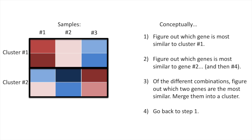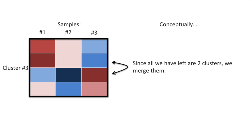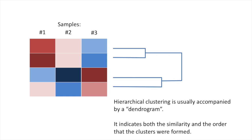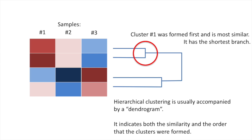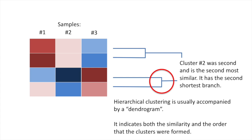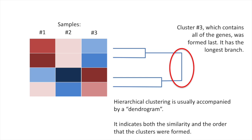Now we go back to step one. However, since all we have left are two clusters, we merge them — and we're all done. Hierarchical clustering is usually accompanied by a dendrogram. It indicates both the similarity and the order that the clusters were formed. Cluster number one was formed first and is most similar — it has the shortest branch. Cluster number two was second and is the second most similar, with the second shortest branch. Cluster number three, which contains all of the genes, was formed last and has the longest branch.